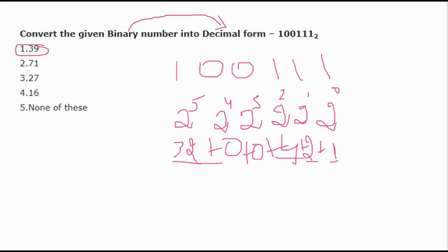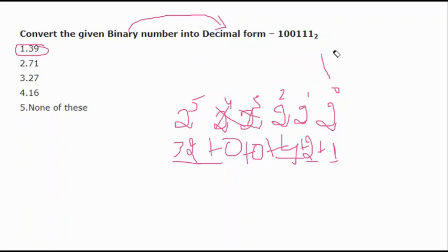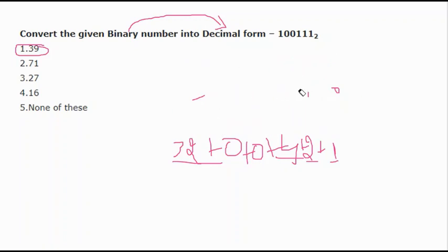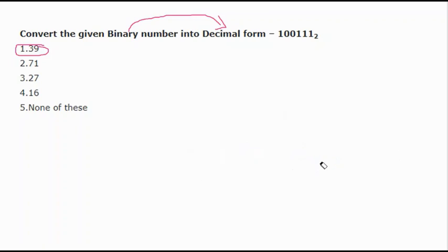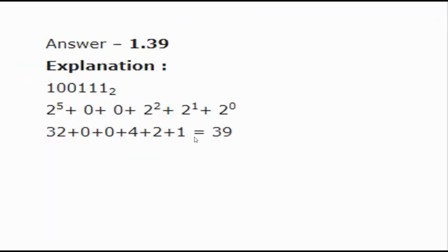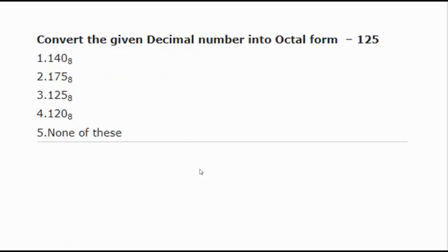The reason we ignored certain positions is because those digits are 0 in the binary number, so we don't consider them. Use your common sense and logic. If you accidentally include those zero-position values, you'll get the wrong answer. The explanation is also provided for reference.